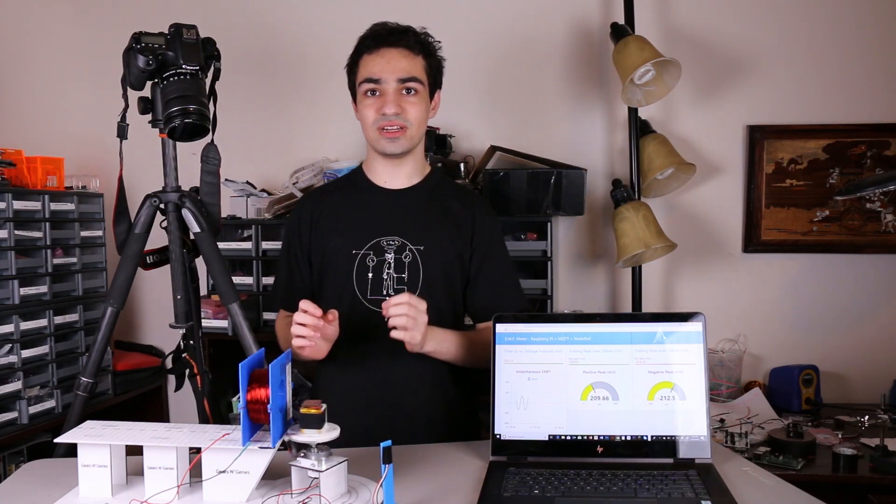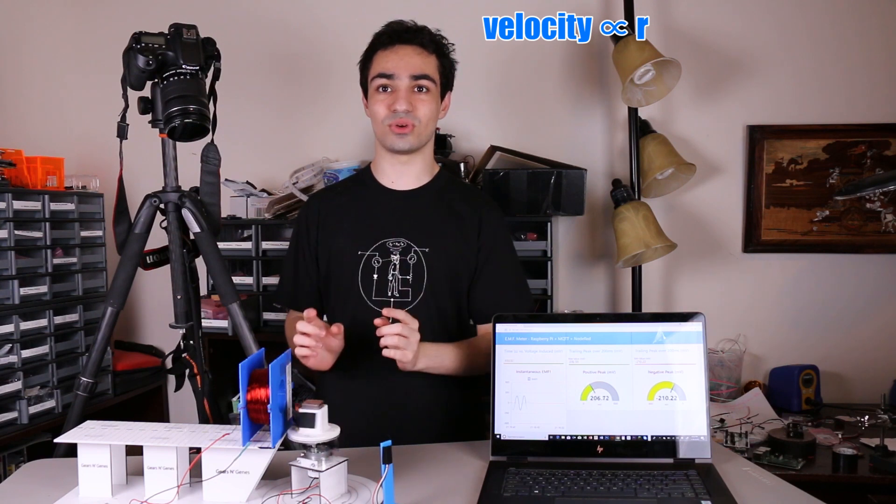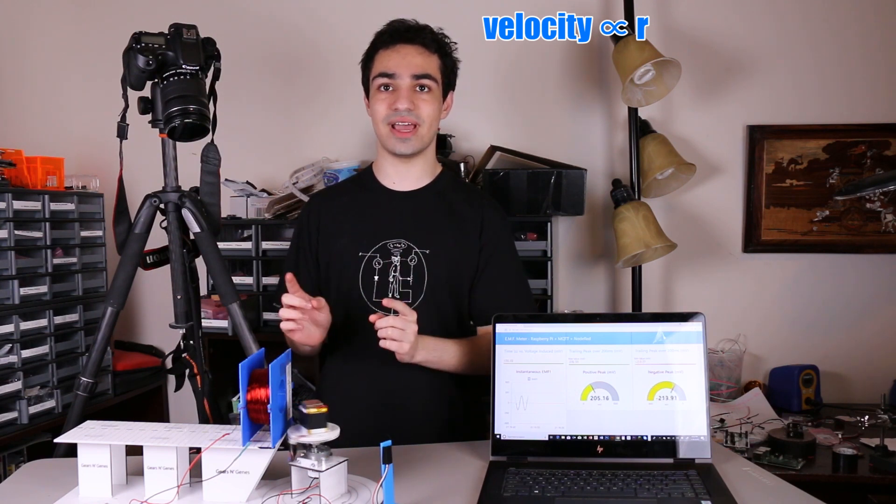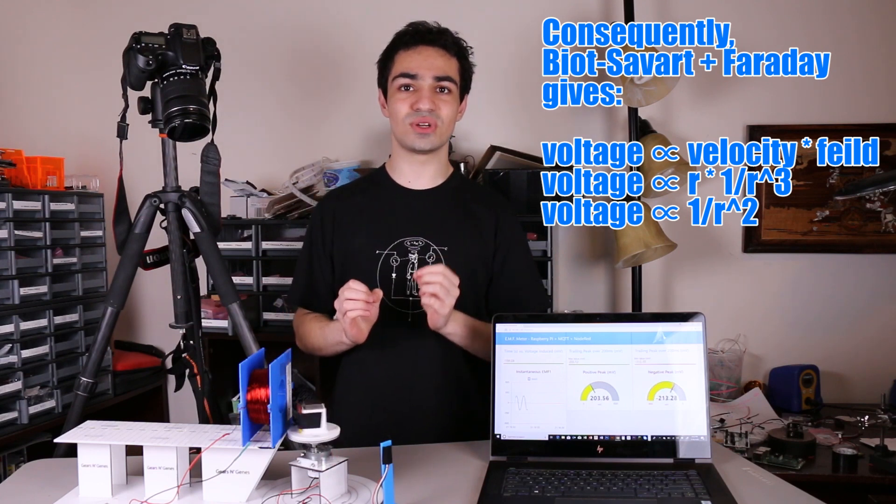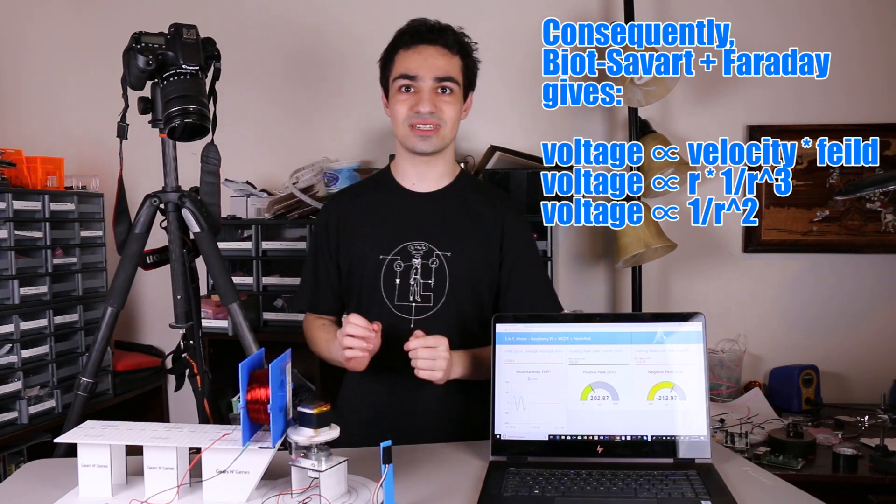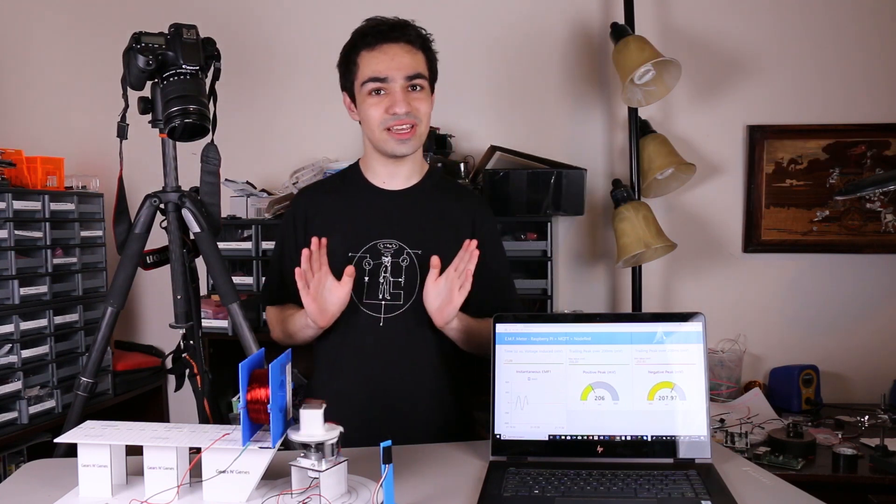However, since we're in a circular motion, the velocity is linearly proportional to the distance between the coil and magnet. Therefore, the voltage should be inversely proportional to the square of the distance. To find out, let's do a little test.